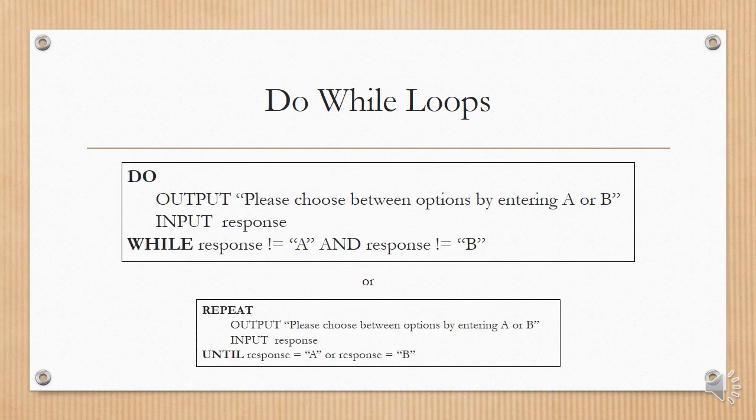A do-while loop can be done two ways. In Java you say DO at the top with curly brackets, and at the bottom WHILE with brackets and a semicolon — you can stick to that method. For example: DO output "please choose between options by entering A or B", input response, WHILE response is not A AND response is not B. Alternatively, you can say REPEAT UNTIL — note the condition is different: the response must be A OR the response must be B, which is the opposite condition.